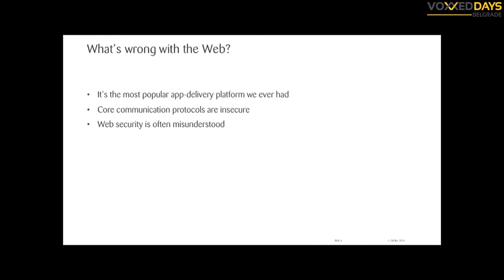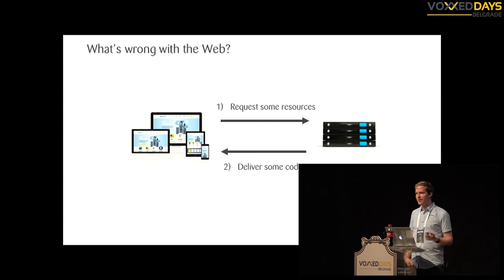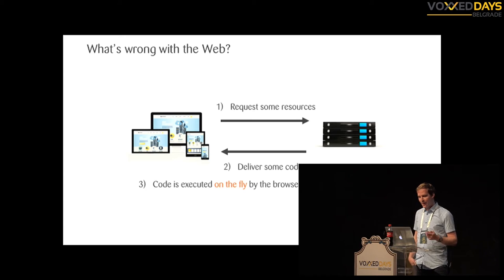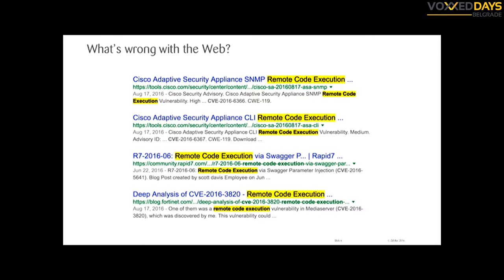It can also be pretty complex. If you look at how the web works, we have the user agents, the server, and when you click on a link the browser sends a request and you get some resources back — it can be some JavaScript, CSS, HTML — and the browser executes it on the fly. So in other words, a browser is a remote code execution engine.